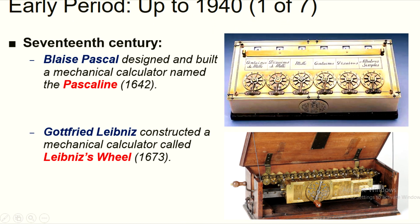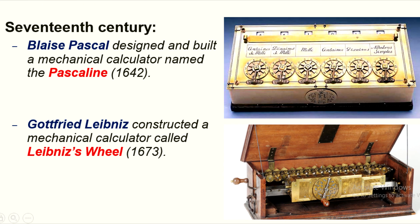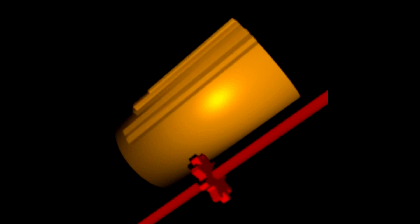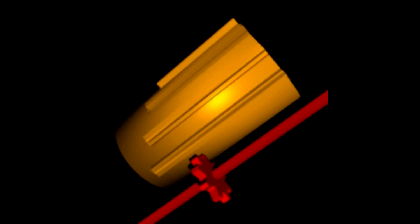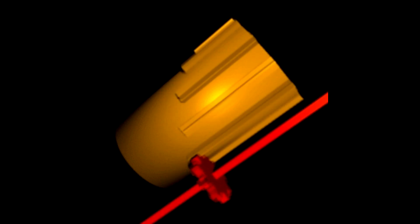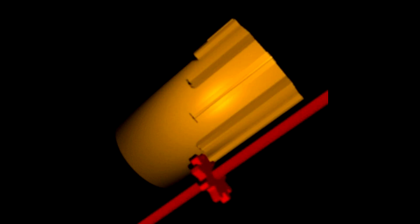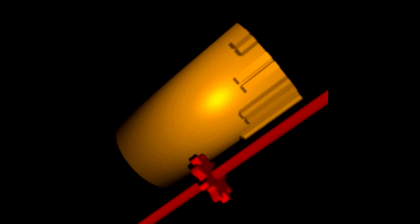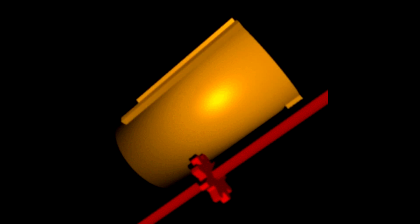On 1673, Gottfried Leibniz constructed a mechanical calculator called the Leibniz Wheel. Leibniz tried to combine principles of arithmetic with the principles of logic, and imagined the computer as something more than a calculator. He also discovered that computing processes can be done much easier with binary number coding.